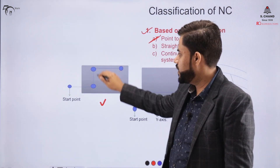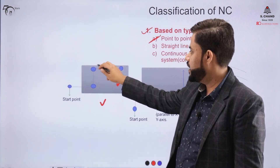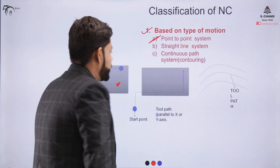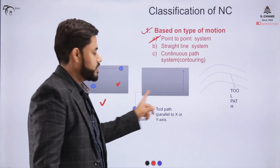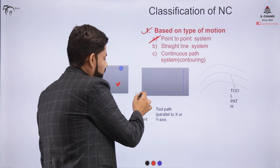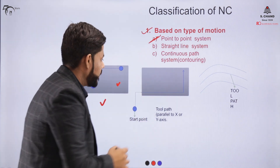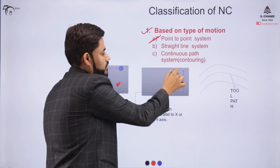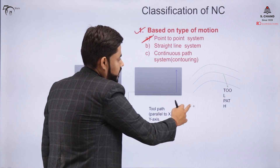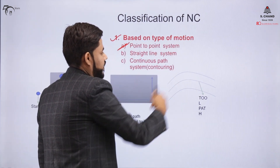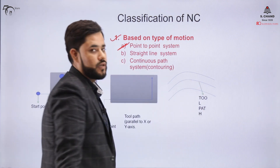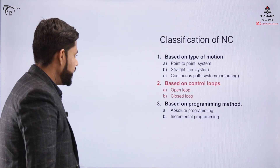The tool drills a hole, comes back, goes to the third point, drills a hole again — this is the point-to-point system. For straight line machining, the tool is given a depth of cut so that when it contacts the workpiece it follows a straight line path and cuts the necessary length. For a contour or continuous path requirement, the tool moves in a continuous direction, forming a contour on the surface being machined.